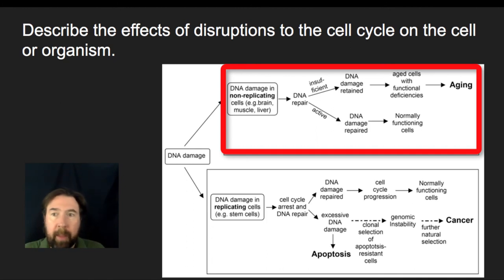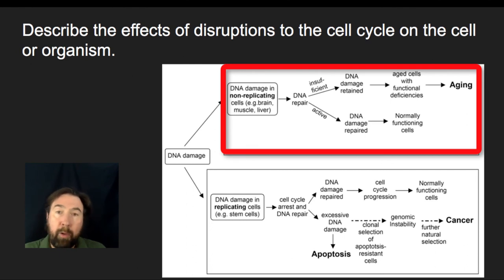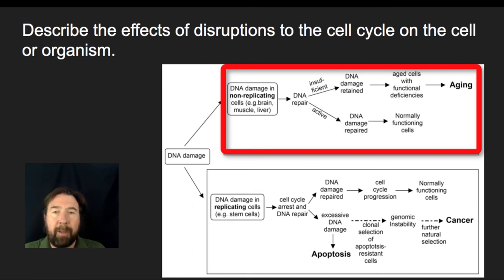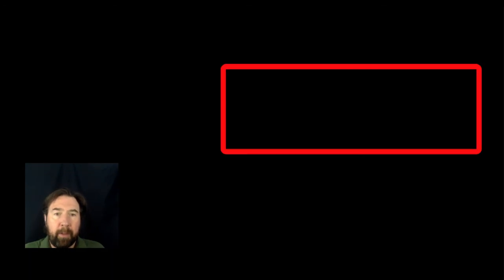We all know that certain tissue doesn't look as young as other tissue. Skin, for example, over time will become aged and look older. If you were to look at the skin of a newborn versus somebody who is much older, you're going to notice a difference, and this may be due to DNA damage leading to the aging of that older individual.